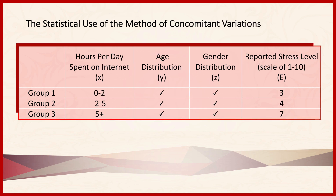The next example concerns the statistical use of the method of concomitant variations. The question being examined is whether spending more and more hours per day on the internet increases people's reported levels of stress. To make things easy, I've broken people into three groups: group 1 spends 0 to 2 hours per day on the internet, group 2 spends 2 to 5 hours, and group 3 spends 5 plus hours.